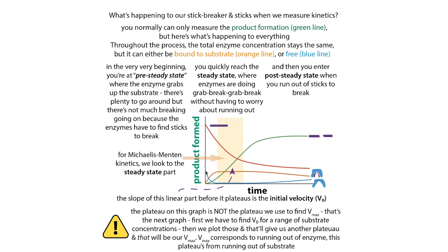There's a phase before the steady state called the pre-steady state, where the enzyme grabs up the substrate — there's plenty to go around but not much breaking is happening yet because you have to pick things up. Then the enzymes get into their flow, and in the steady state they're doing grab, break, grab, break, grab, break without running out. They could also be dropping the substrate, but then there's another one they can pick back up. Eventually you reach the post-steady state where you start running out of sticks to break.